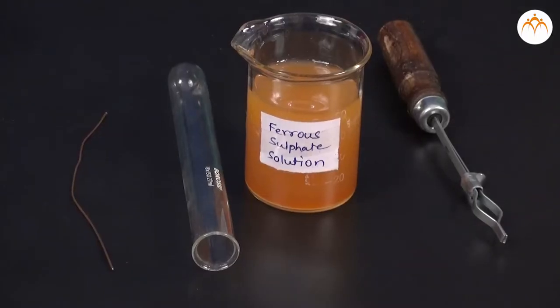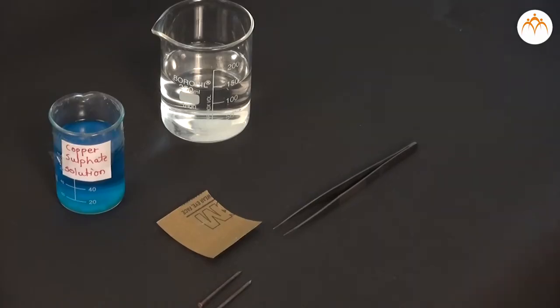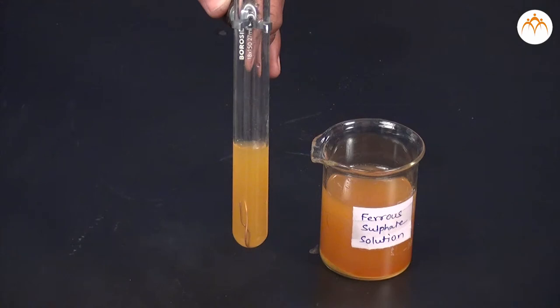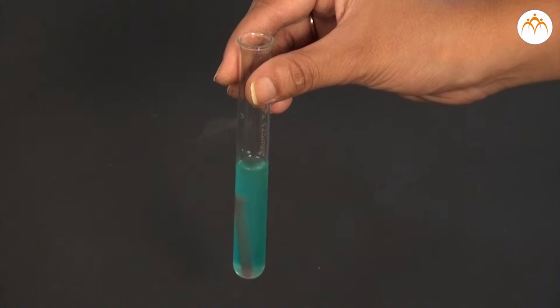Reaction of metals with other salts. Metals are not equally reactive. Take a clean copper wire and an iron nail. Put copper wire in iron sulphate solution test tube and the iron nail in copper sulphate solution test tube.